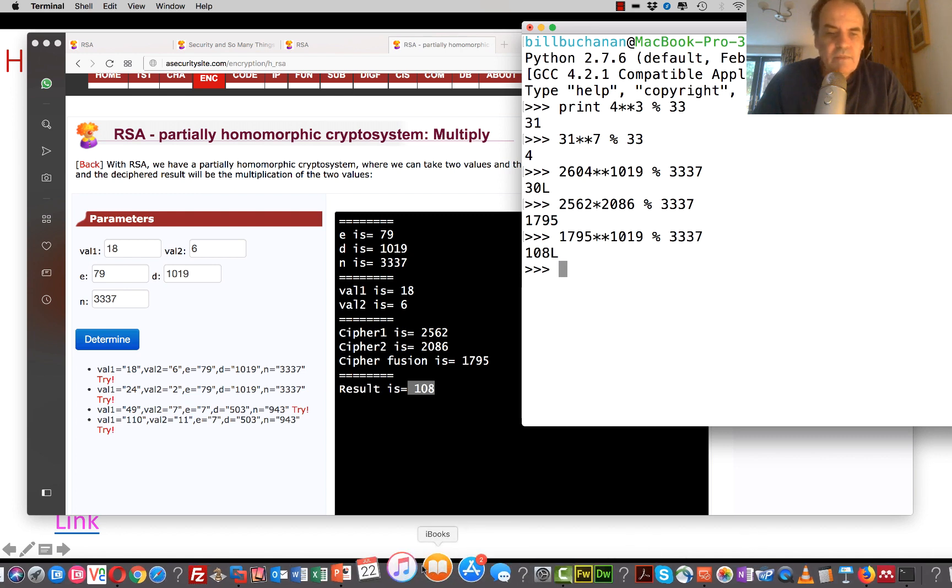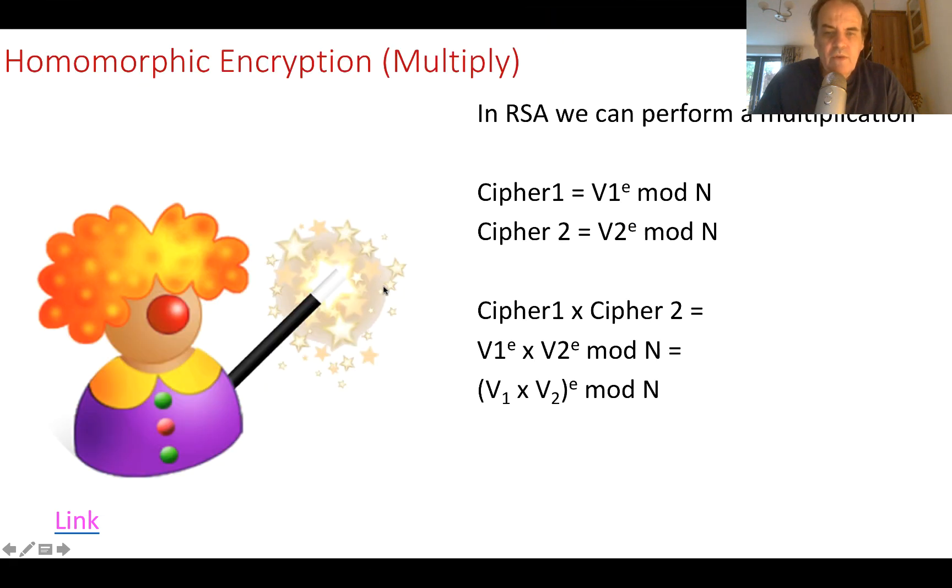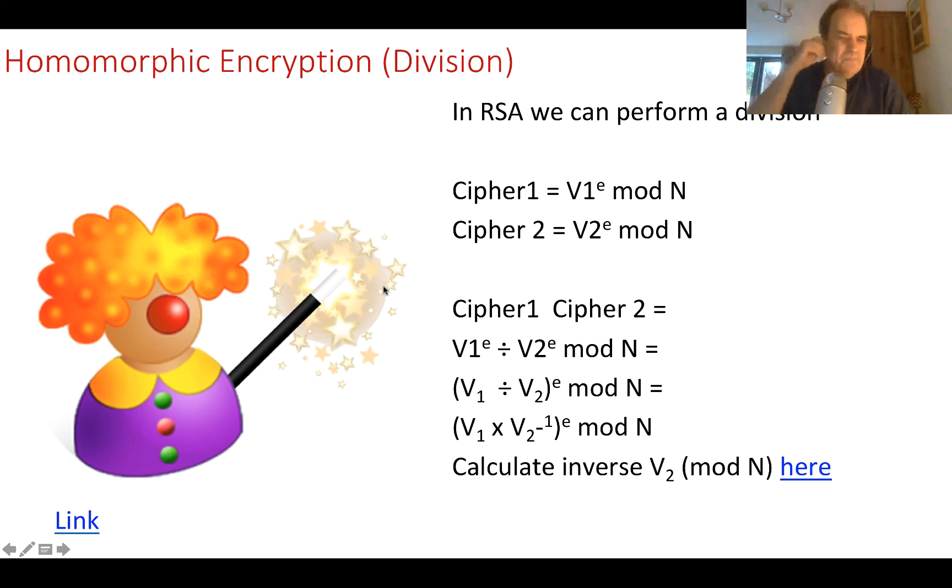And, but what happens if we now look at divide? Well, divide is slightly different. With this, we take our ciphers, and now we're going to divide the ciphers together to give us our result. Okay, so it's V1 divided by V2 to the power of E. And it works. And what we do is we take the inverse mod of V2. The inverse of V2 mod N. So we find this value, and then we multiply that by the V1 value, and that's the equivalent to dividing.